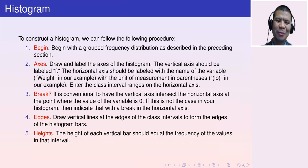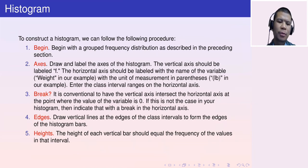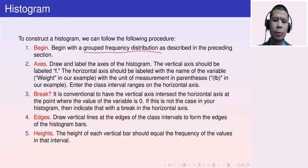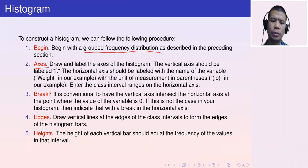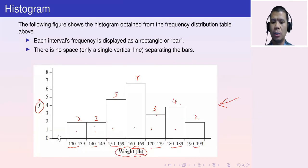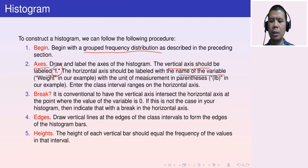To construct a histogram, follow five steps. Step one: start with a grouped frequency distribution table. Step two: draw the axes — a vertical axis labeled F and a horizontal axis labeled with the variable name and unit of measurement in parentheses. Enter the class interval ranges on the horizontal axis.